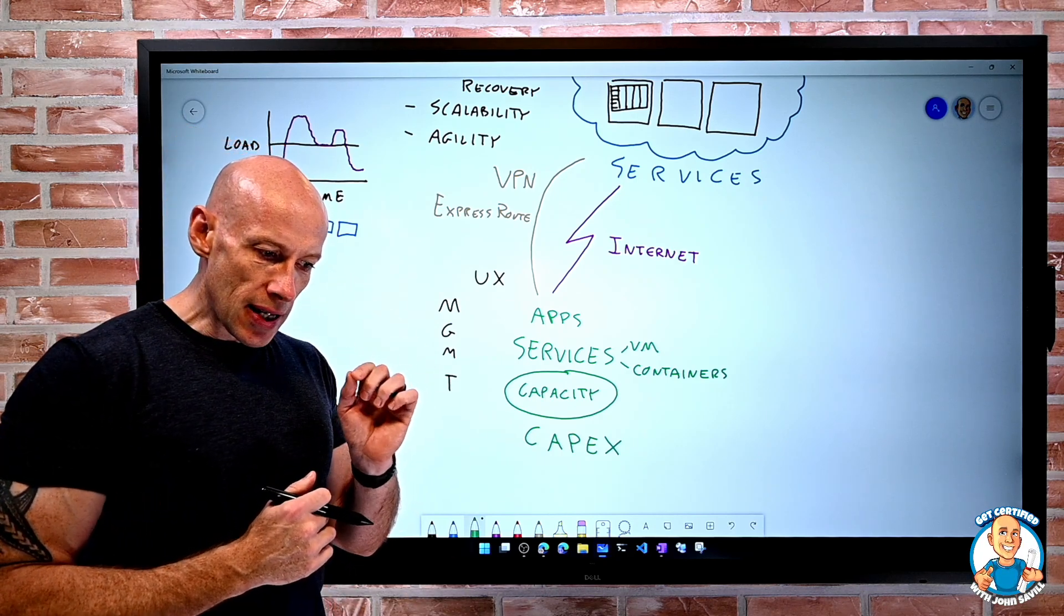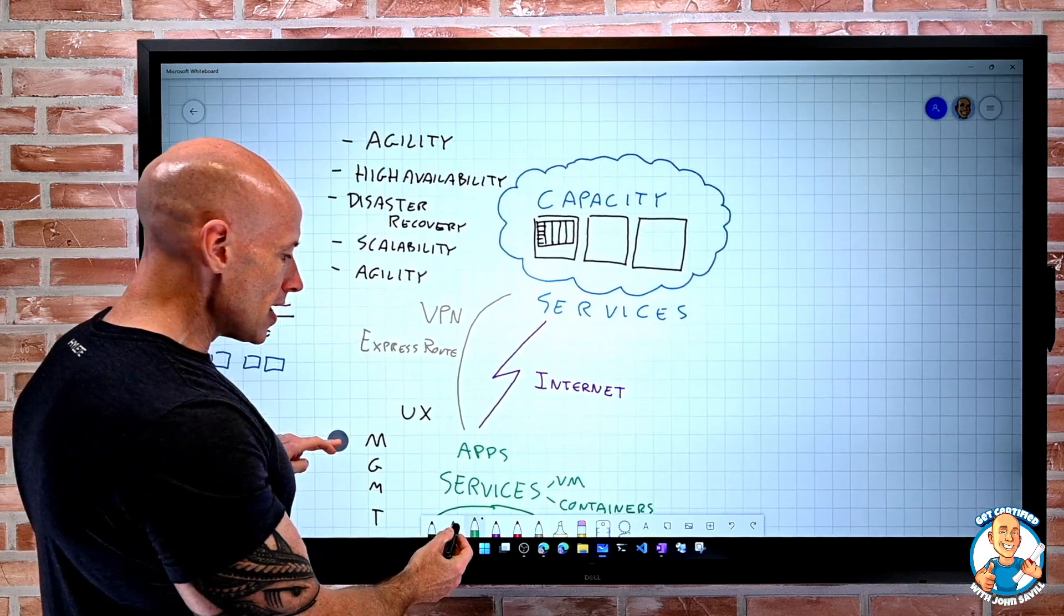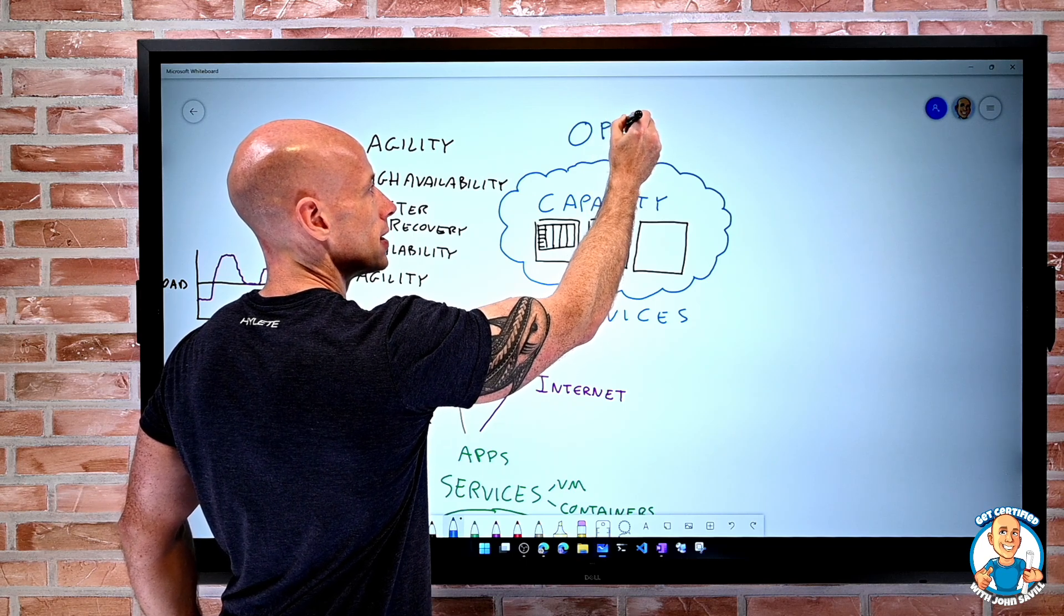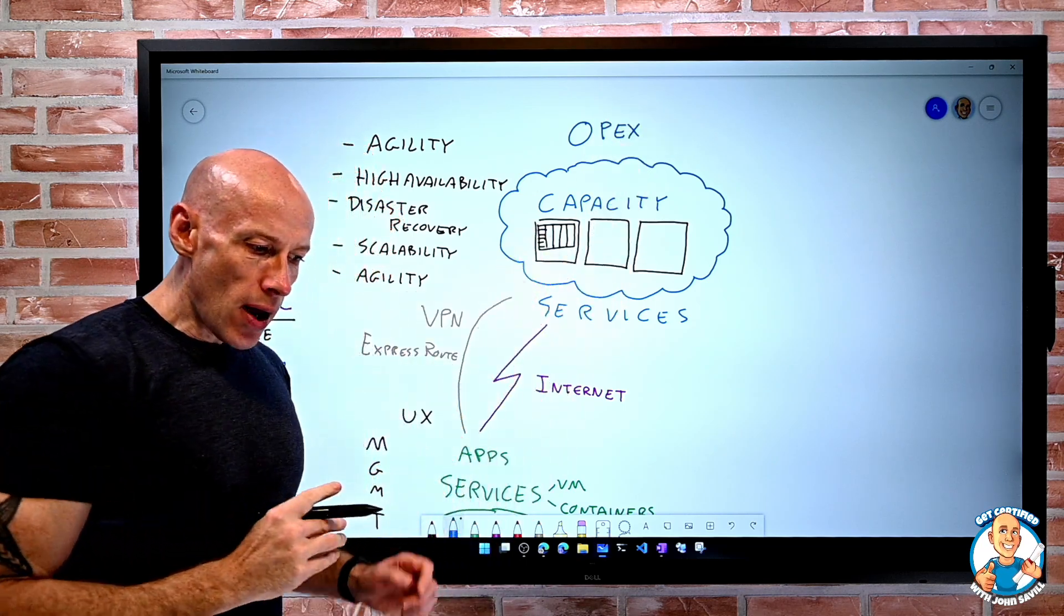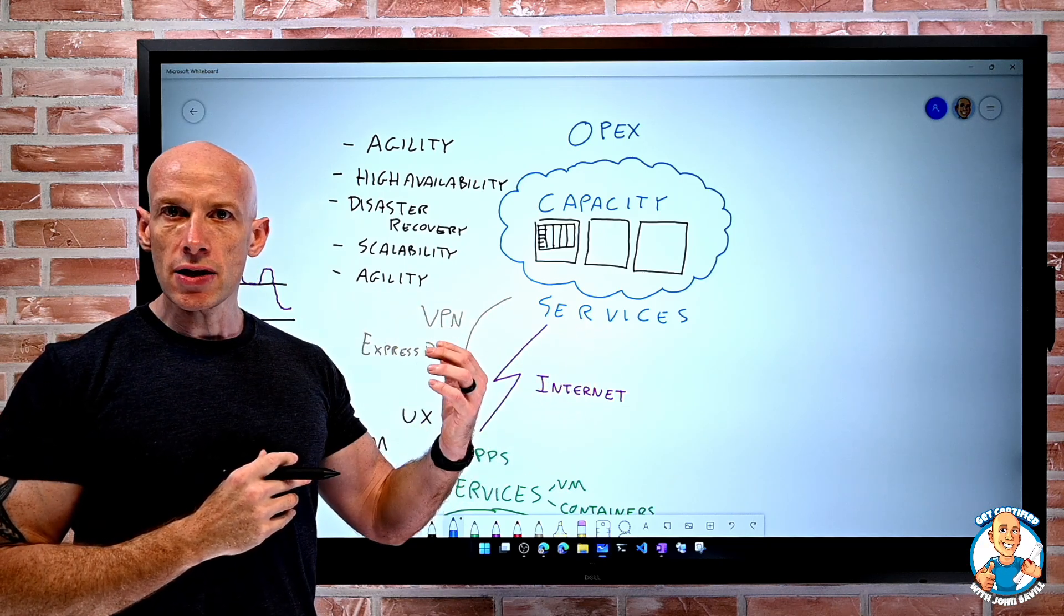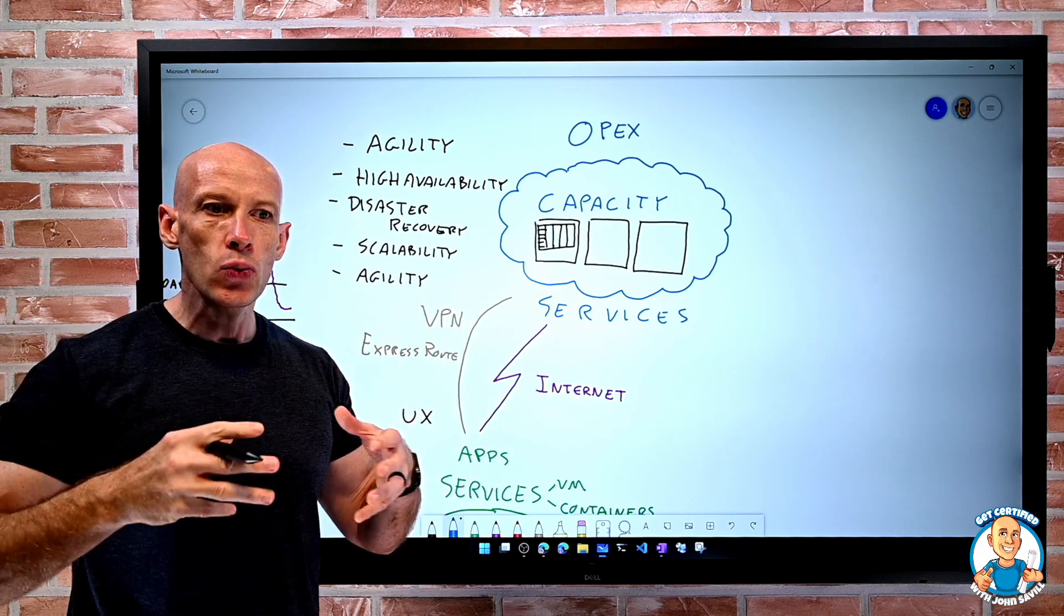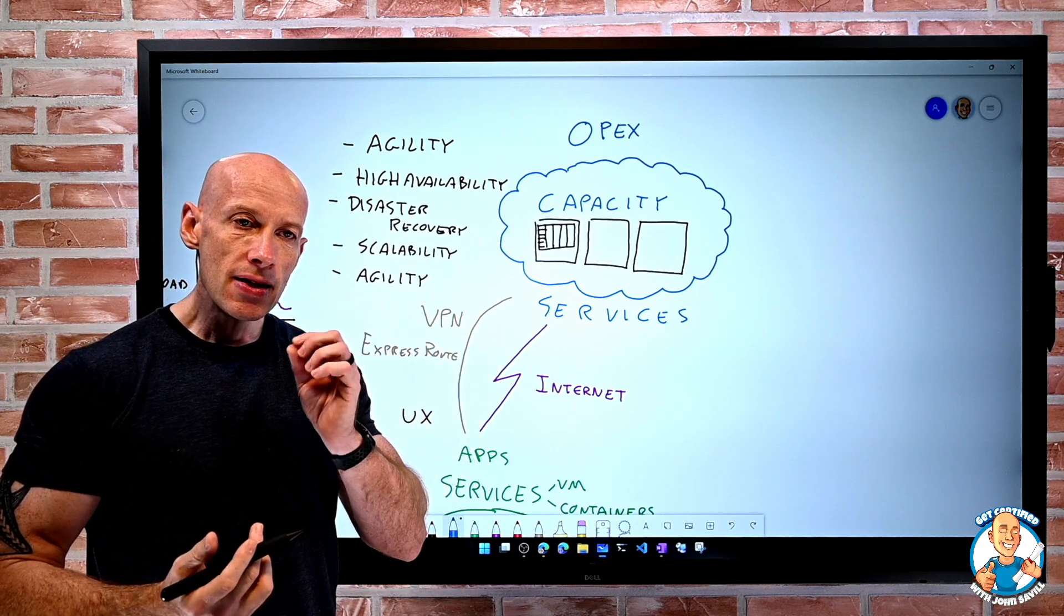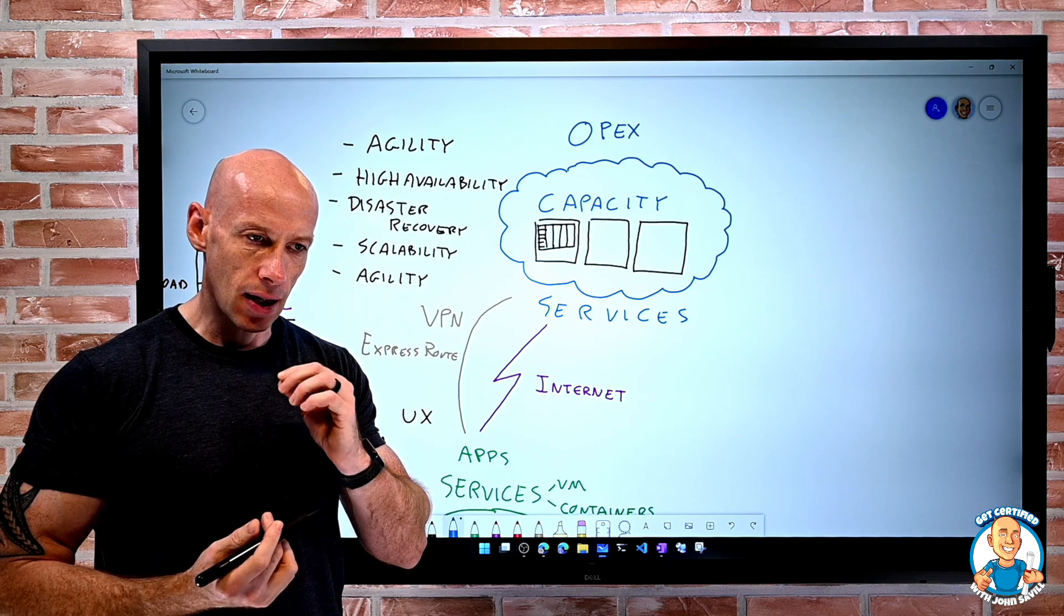Operational expenditure, or OPEX, is really what we think about with things like the cloud. This is where we're not purchasing it up front. We're purchasing the resource, the service, as we use it. There's no upfront cost, it's just consumption-based. This is how we buy services in the cloud.